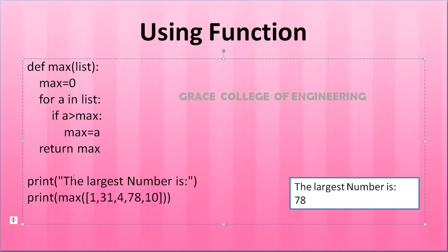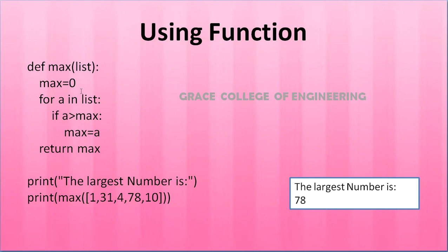def is a keyword used to create a function. The function name is max, and the parameter is list. Inside, max is initialized with the value 0. A for loop is used to compare with all the elements in the list: for a in list. Each element moves to a. If a is greater than max (which starts at 0), then max is equal to a. For example, 1 is greater than 0, so 1 is stored in max. Then 31 is compared with 1 — 31 is bigger, so 31 is stored in max.